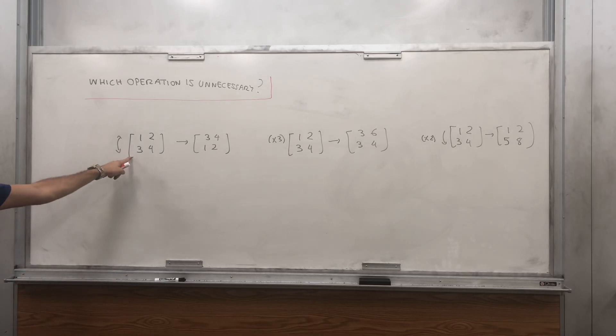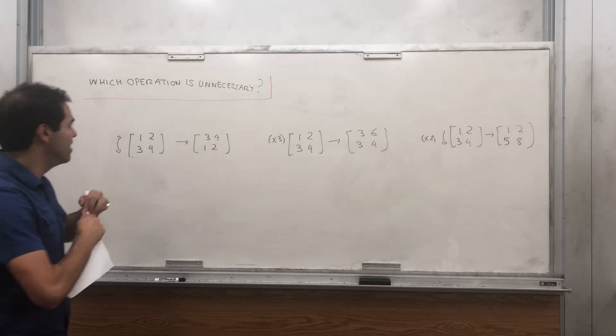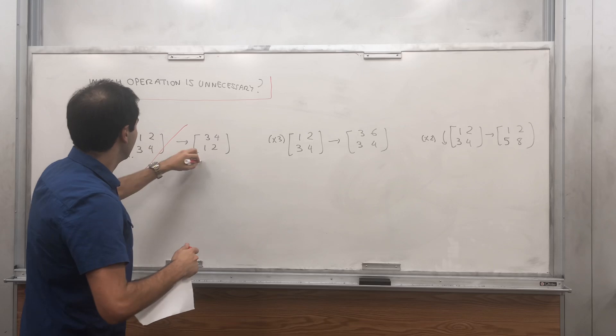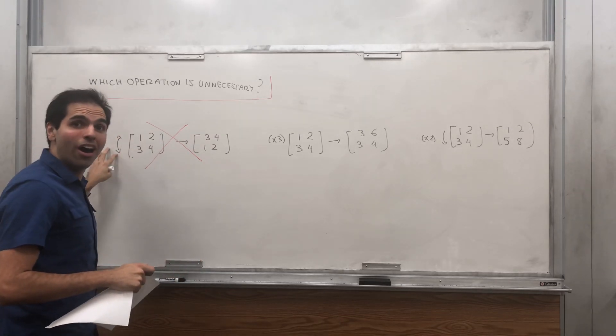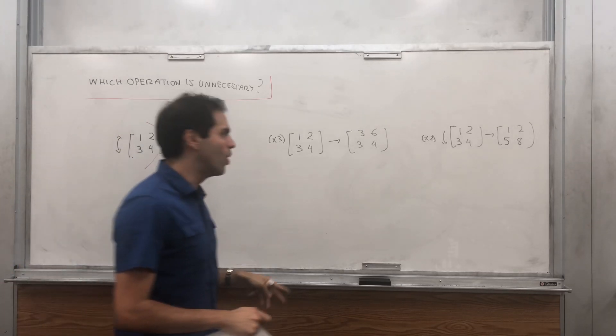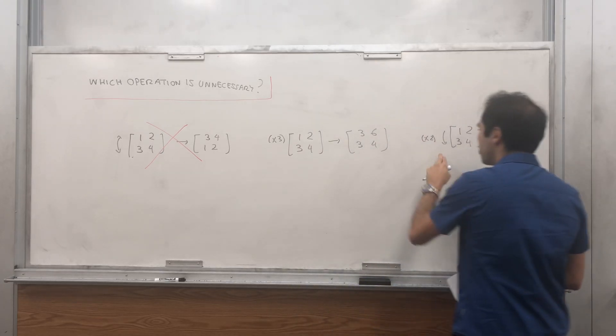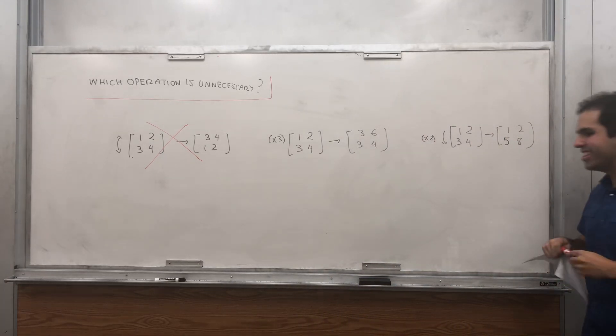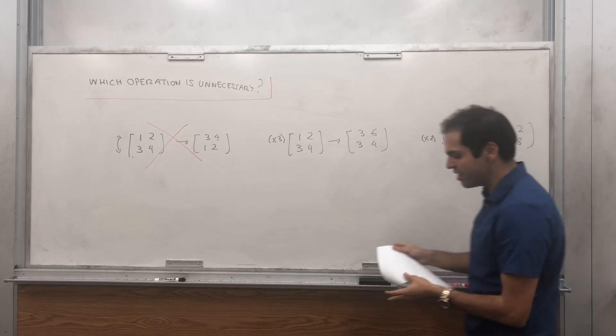Well, it turns out this one is unnecessary. So in other words, you can actually write interchanging two rows in terms of those two other row operations. And let me show you how to do it.